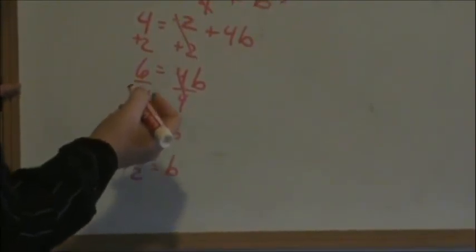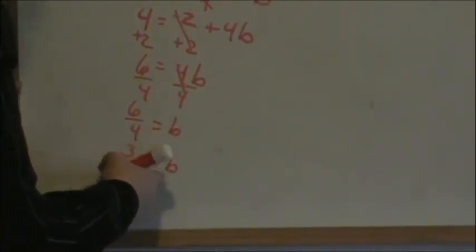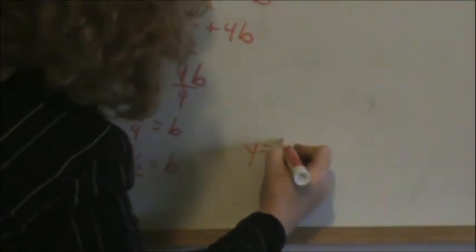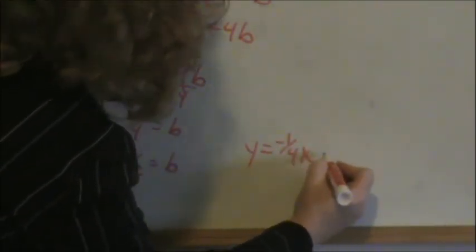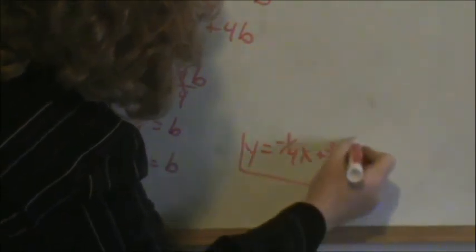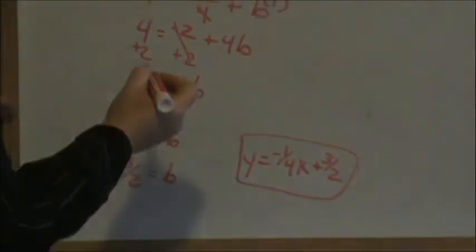Now you know your slope and your y-intercept, so you can write an equation for your line. Y equals, the slope was negative 1 fourth x plus 3 halves, and that is the equation of the line when you are given the slope and that point.